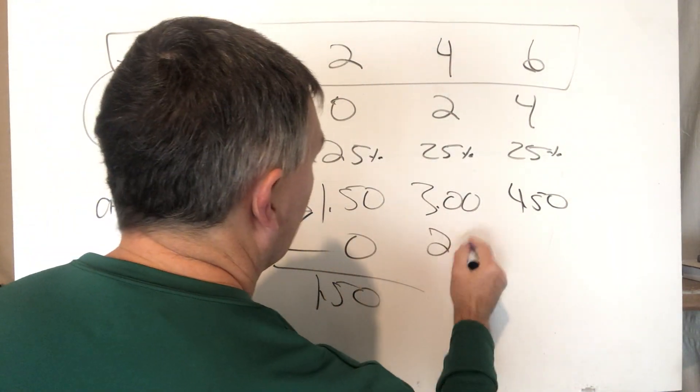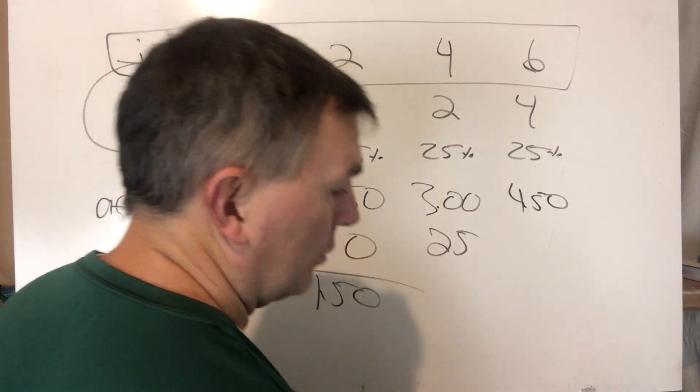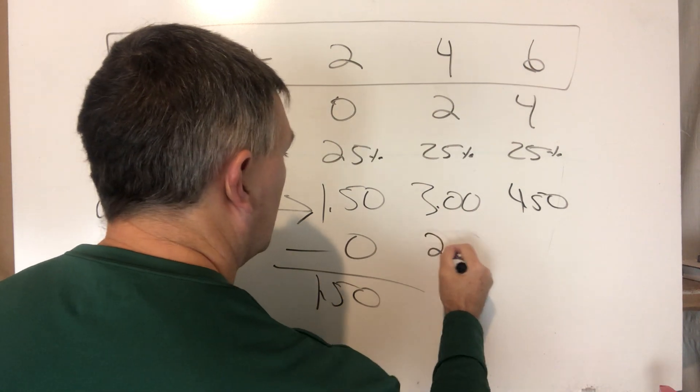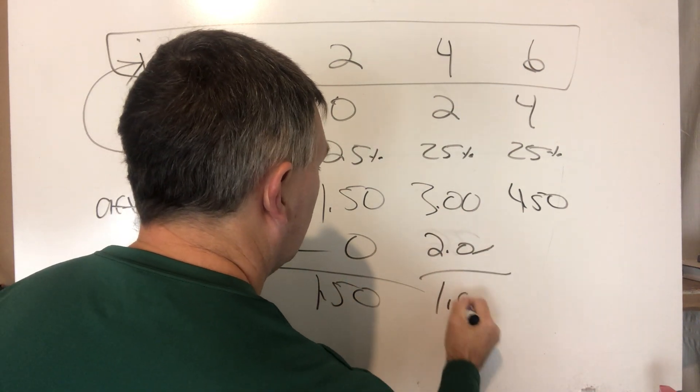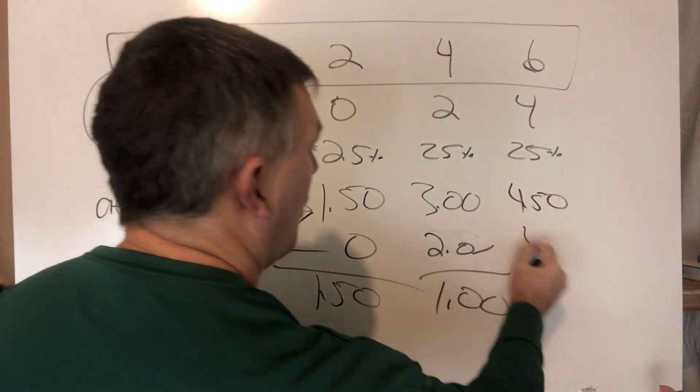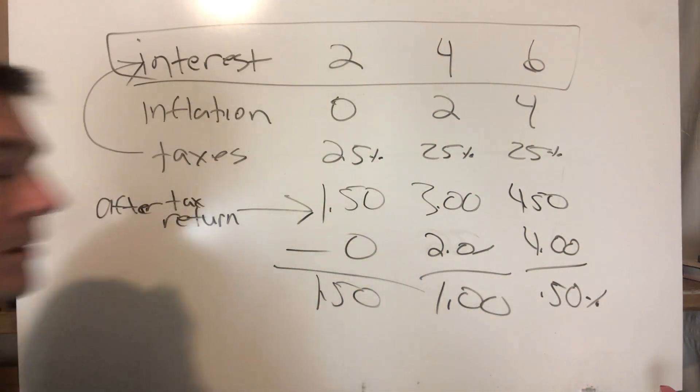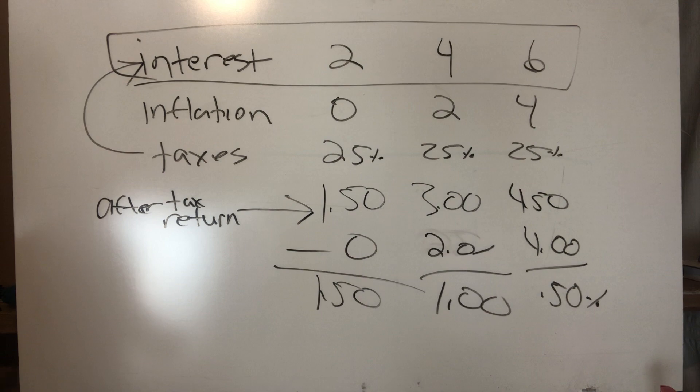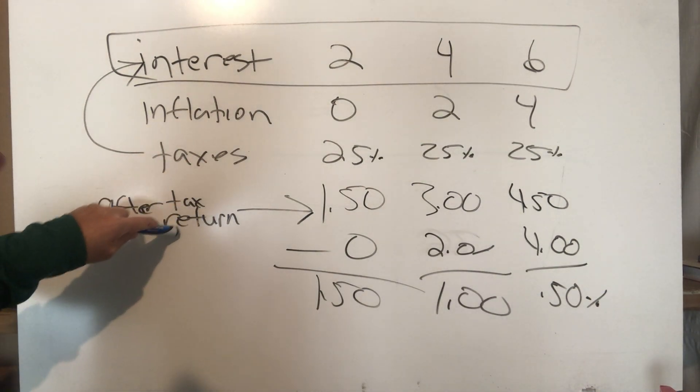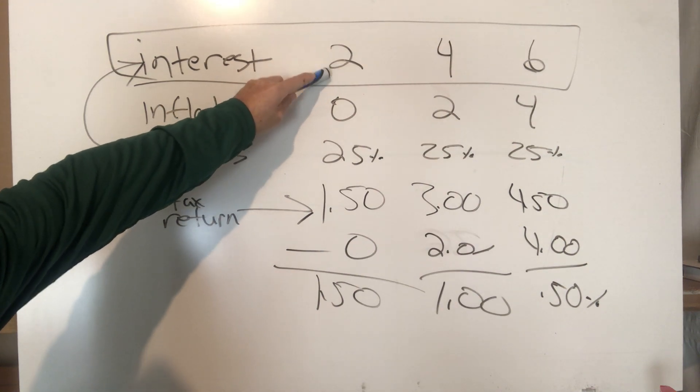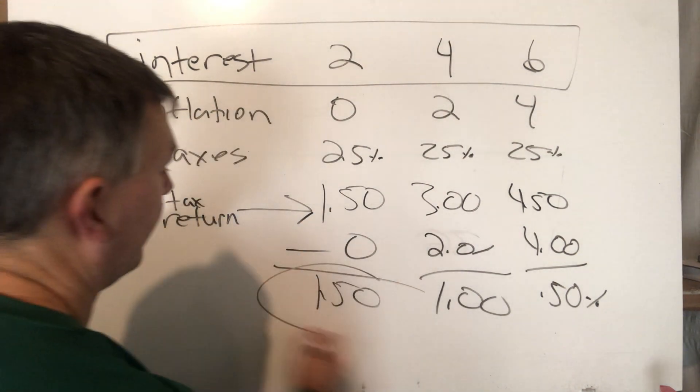But now watch this. Inflation comes in: nothing, so we've got 1.5 net. Inflation comes in at 2%, so that's 1. Inflation comes in at 4%, so 4.5 minus 4 is 0.5. So as you can see, net of taxes and inflation, this is the better return: 1.5.